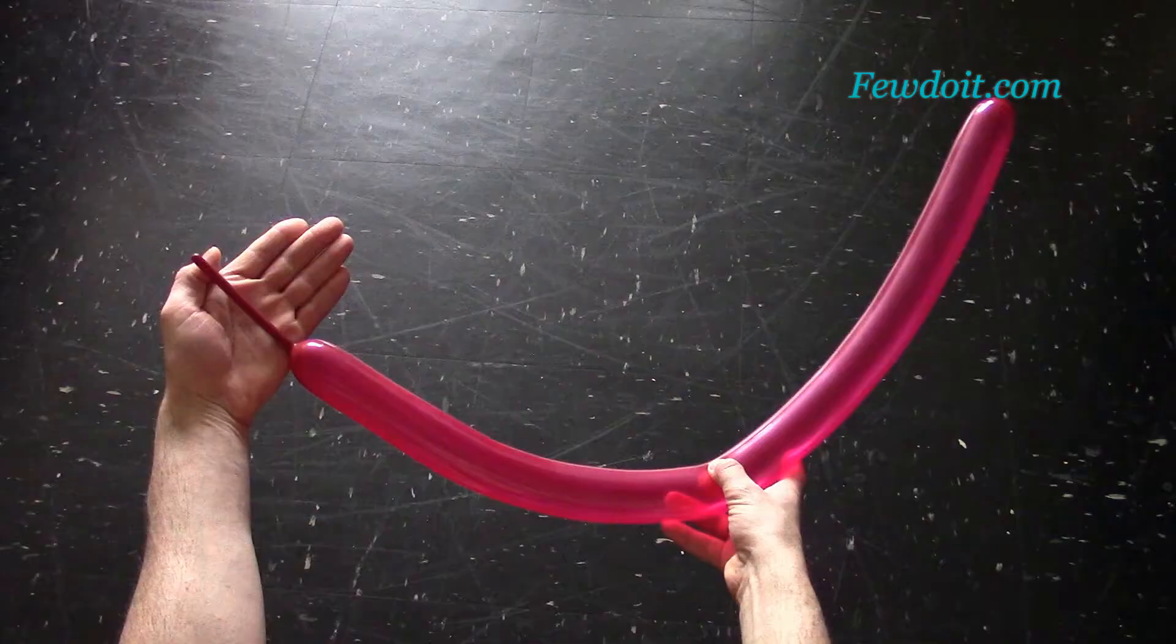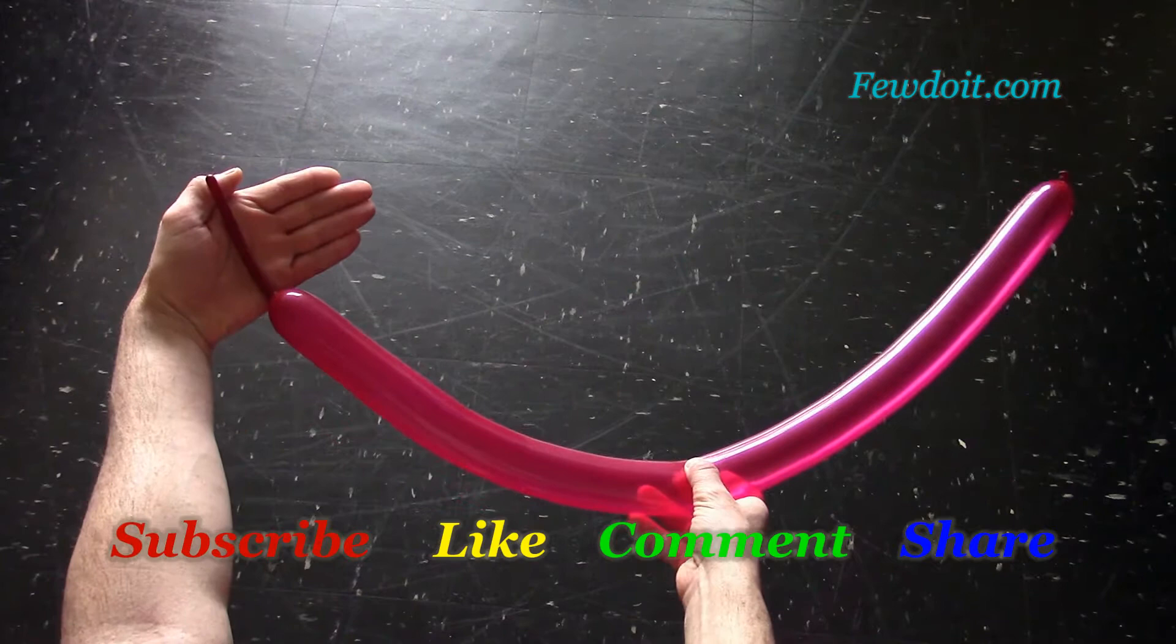Hello everybody! Today we are going to make one balloon mosquito or one balloon fly. Inflate red balloon leaving about 10 cm flat tail.